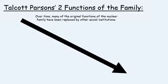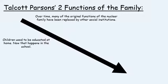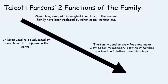Families had vegetables growing in the back garden and would sew their own clothes, so the family was very self-sufficient. But over time, the vast majority of children leave the family home to go to school, and most people have stopped making their own clothes or growing their own food, instead relying on institutions such as supermarkets and clothes shops. So the roles the family used to perform in society have reduced over time.